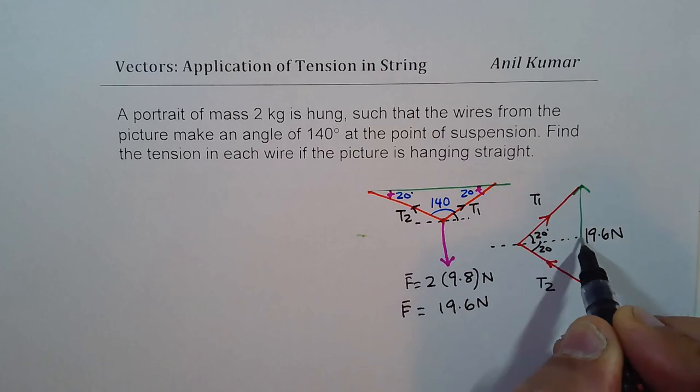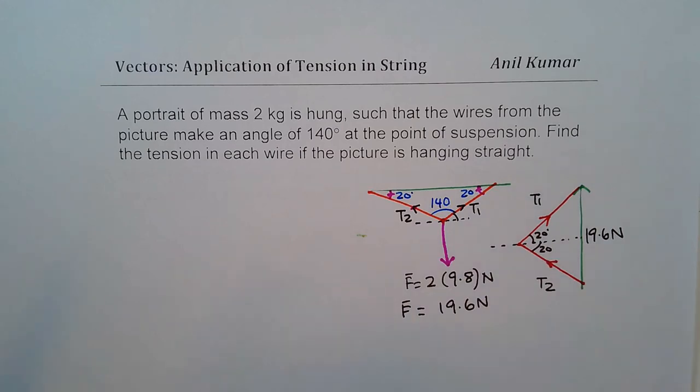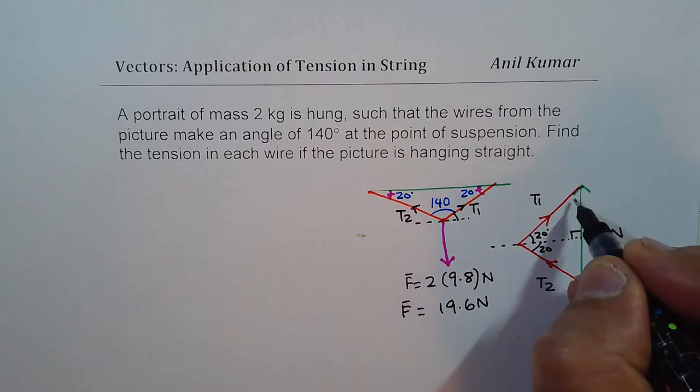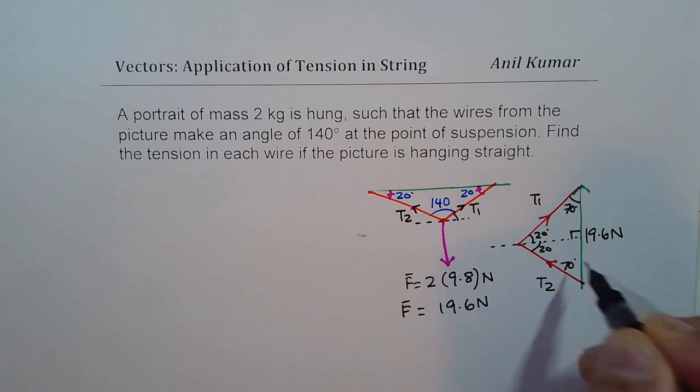Now, here we have 90 degrees. A horizontal meeting of vertical line. So these angles here are 70 each. So I hope the vector diagram is absolutely clear.